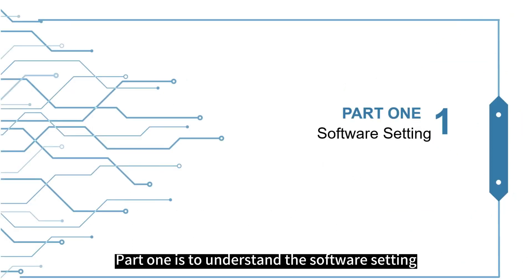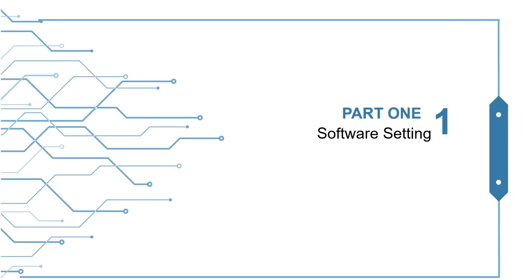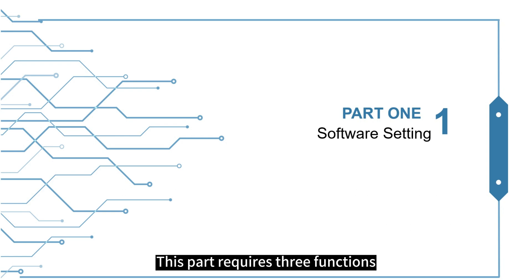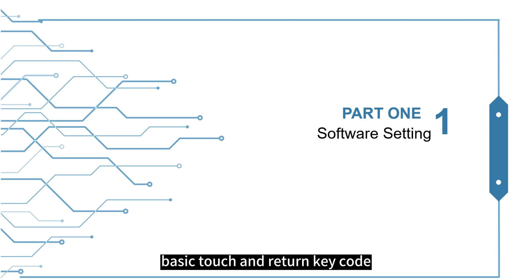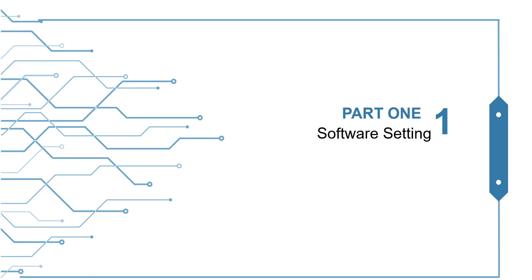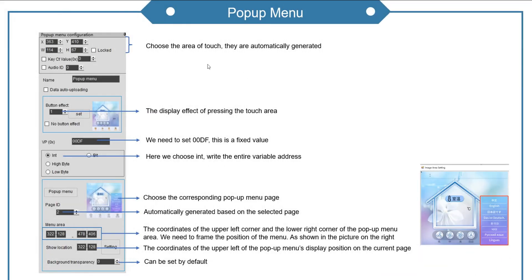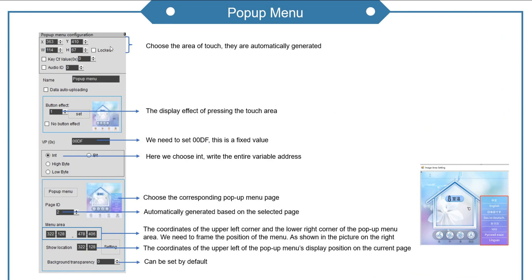Part 1 is to understand the software setting. This part requires three functions: pop-up menu, basic touch, and return key code. These four parameters are automatically generated when we choose the touch area.